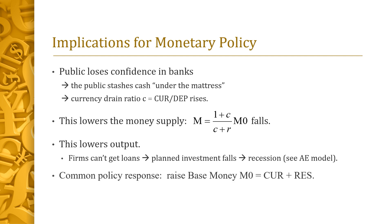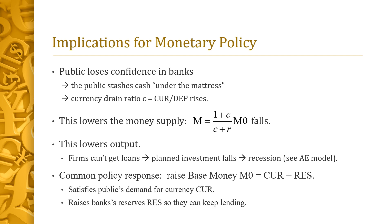What might the central bank do? Since money M is an increasing function of base money M0, which is under the RBA's direct control, the central bank can counteract the rise in C by raising base money — buying bonds from banks or the public. Intuitively, increasing base money satisfies the public's increased demand for currency while also bolstering banks' reserves so they can continue to lend. This concludes the GBE pre-lecture video on money: advanced concepts. Thank you for watching.